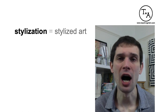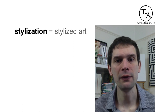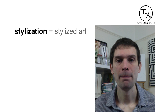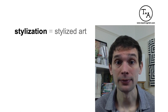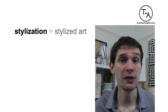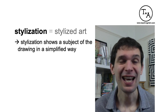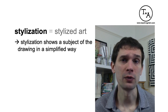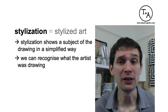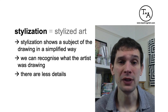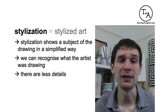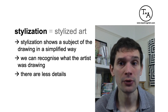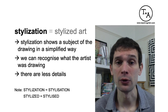Moving on to the second term, which I think is the most interesting one because it is not a well-known term — that is stylization or stylized art. Basically, stylization means simplification. In other words, the subject is simplified, it is less defined, hence there is much less detail. So you as a viewer can still recognize what the artist was drawing, but the drawing itself does not look the way you would normally perceive it. In stylized art, the artist can use fewer details, change the color of the subject, or simplify its overall shape.